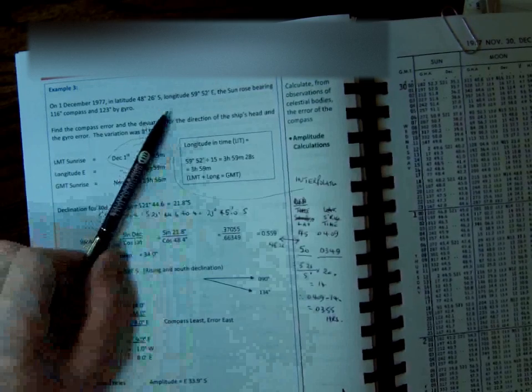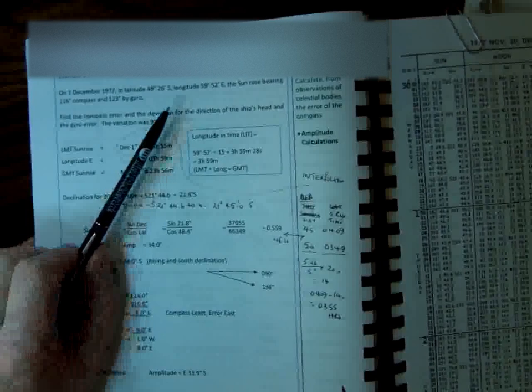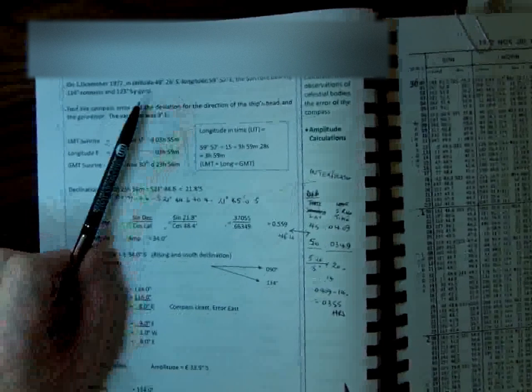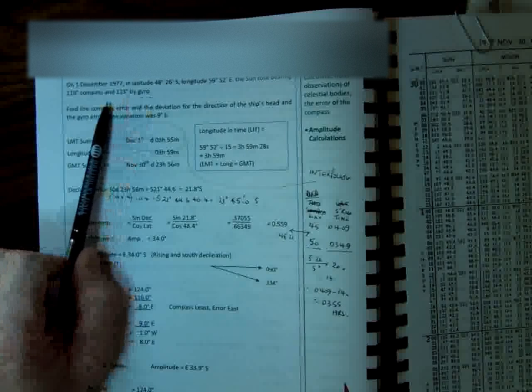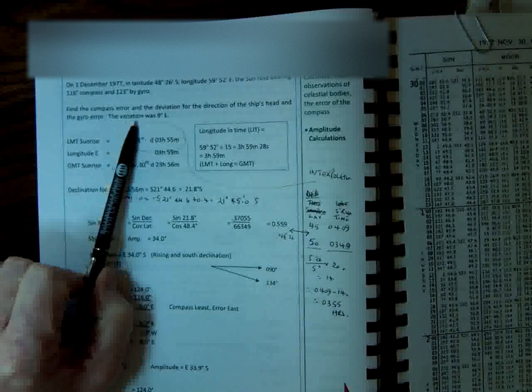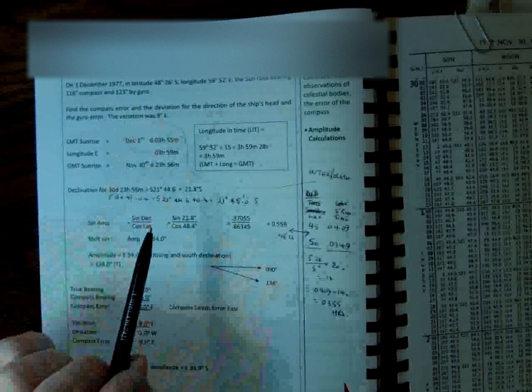What we're going to look at here is the amplitude problem, where you have a bearing of the sun either rising or setting. It's a compass bearing, and you're asked to find your compass error. In this instance, example 3, gyro error as well. And we're told that the variation is 9 degrees east, and we need to find the deviation for the ship's head.